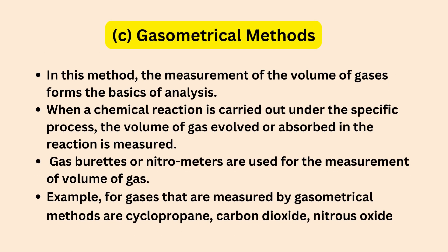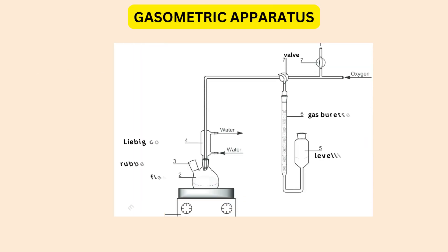Next is gasometric methods. This method is based on the measurement of volume of gas as the basis of analysis. We measure the gas using instruments called nitrometers. For example, gases used include cyclopropane, carbon dioxide, nitrous oxide, oxygen, and octal nitride.